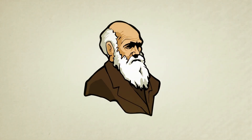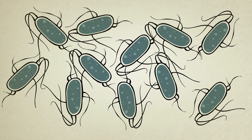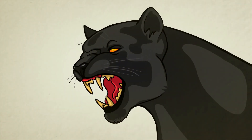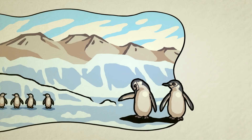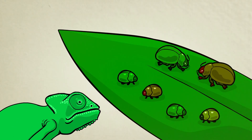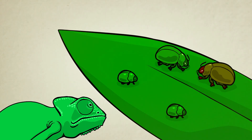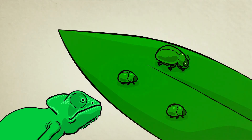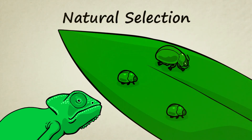Darwin proposed that nature itself is also capable of selection. It may not have an intelligent brain like a farmer, but nature is an extremely dangerous place in which to live. There are germs which can kill you, animals that can eat you — you could die of heat exhaustion or exposure to the cold. When parents produce a variety of offspring, nature, simply by being difficult to survive in, decides which of those variations get to live and reproduce and which do not. Over multiple generations, creatures become more and more fit for survival and reproduction within their specific environments.